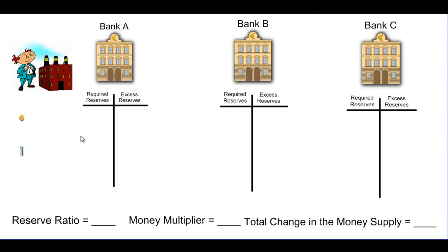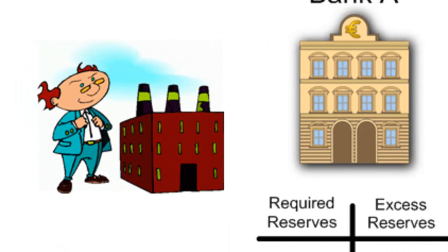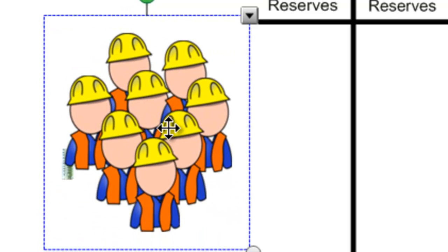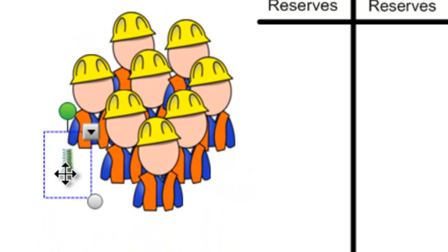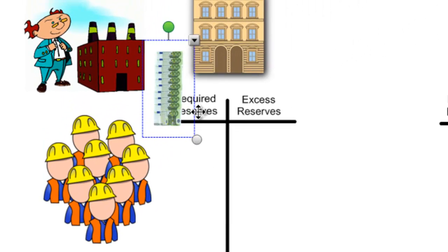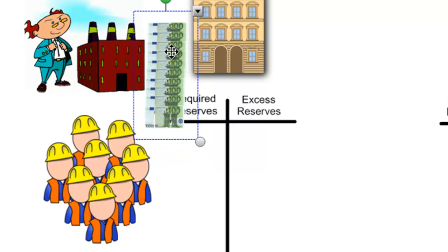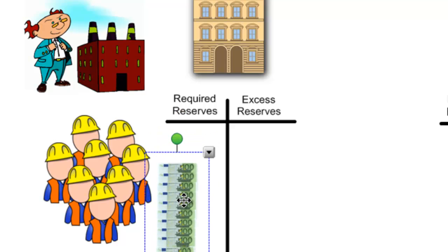To understand how money is created through a fractional reserve banking system, we start with the assumption that there is a business in which goods and services are produced. In our upper left-hand corner we have a businessman and his factory. This businessman employs workers in the production of goods and services. Upon the sale of the factory's output, these workers will be paid. We have 1,000 euros which this factory owner has earned from the sale of its goods and services and is going to pay to its workers.